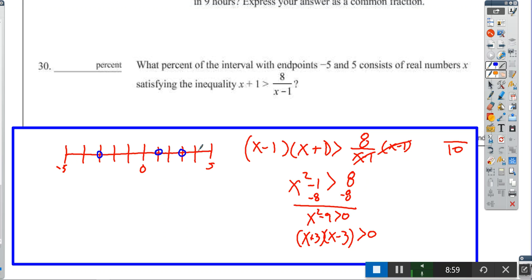Let's start with -5. If I plug in -5, I get -5 + 1 = -4 is greater than 8 over -6. Is this true? The answer is no, it's not true, because this is going to be a lot bigger than -4. So I know the numbers on this side will not work.